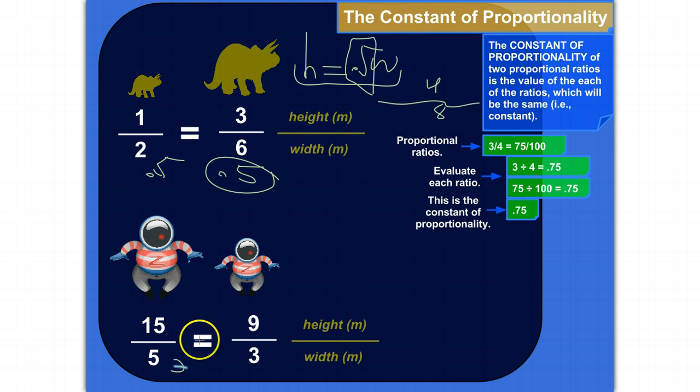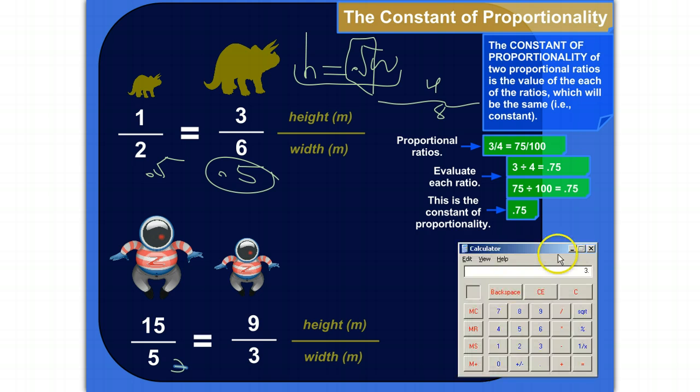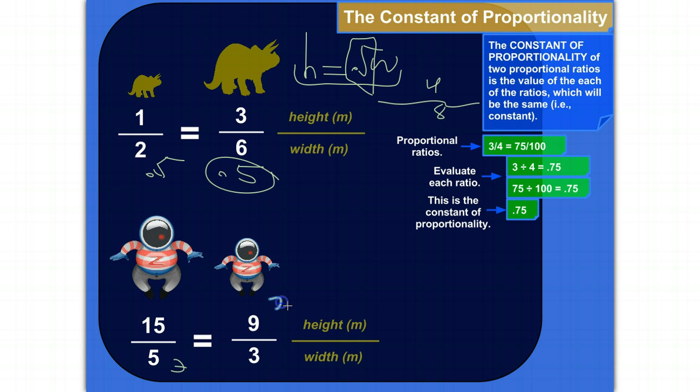9 divided by 3 is 3. So the value of each of these ratios is 3. So 3 is the constant of proportionality. It's the constant value of all the ratios that are proportional to these ones.